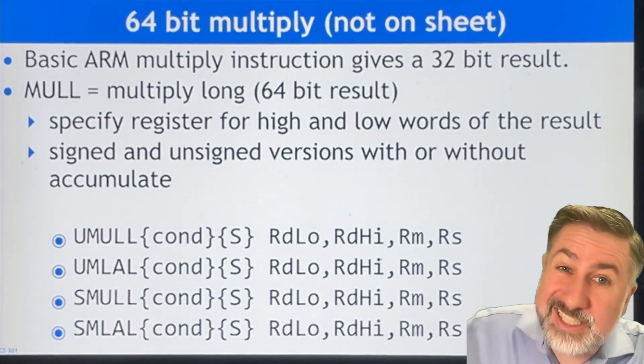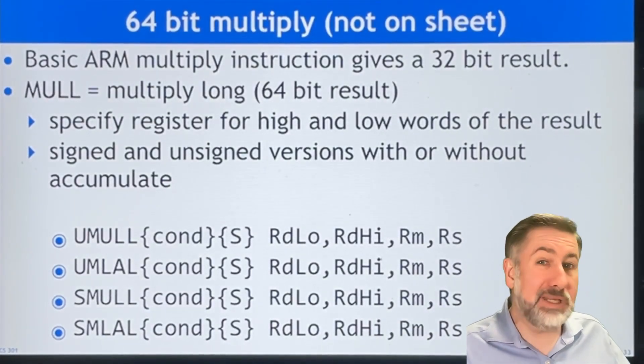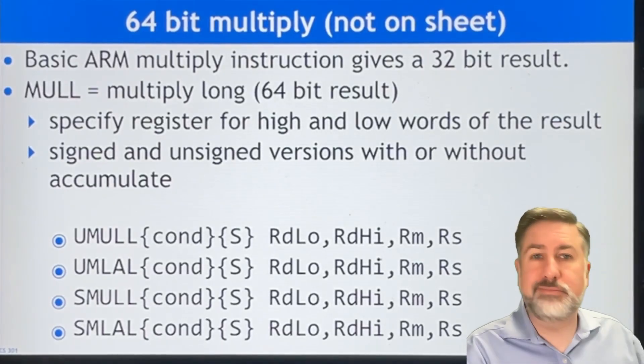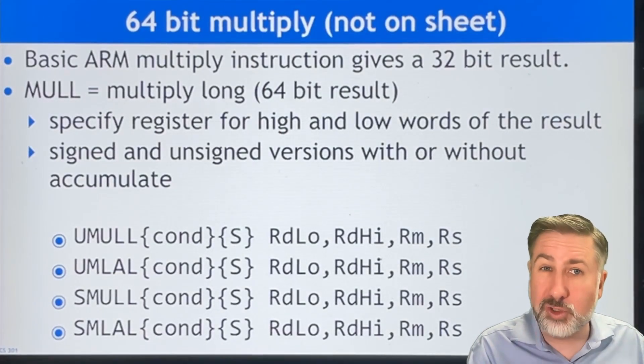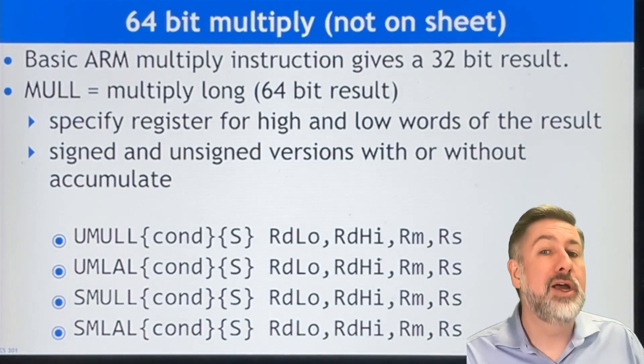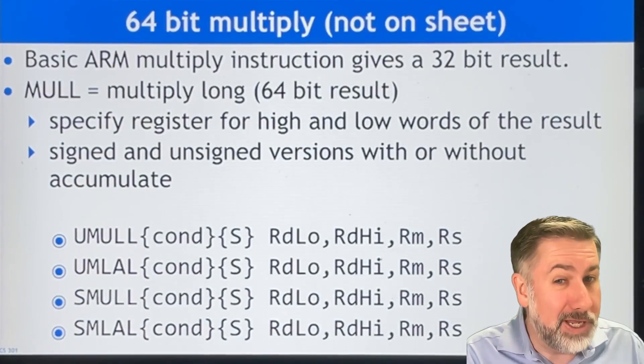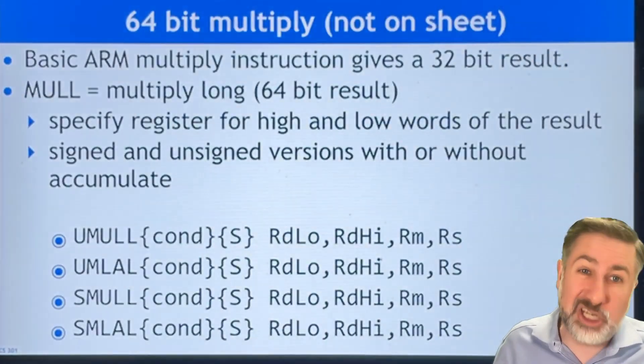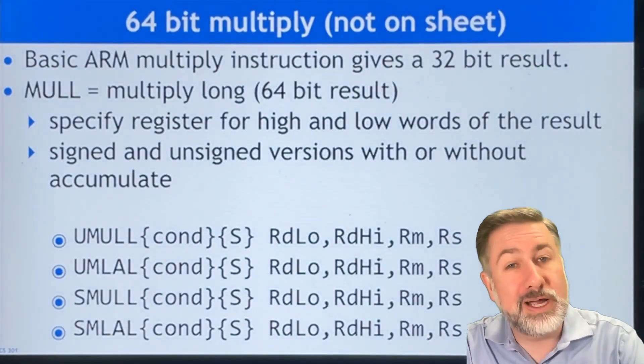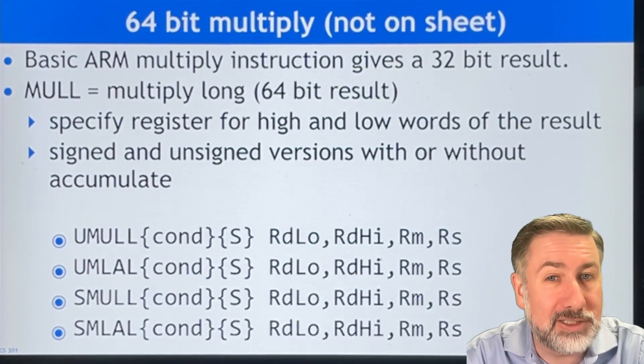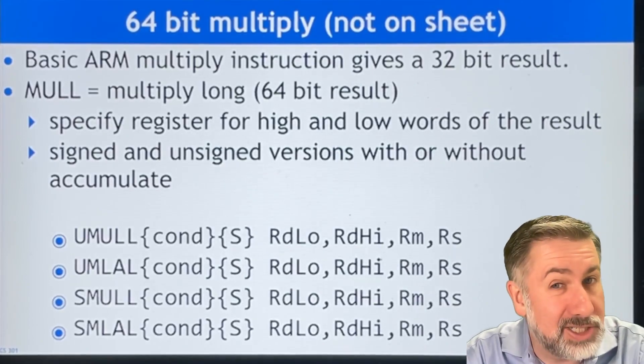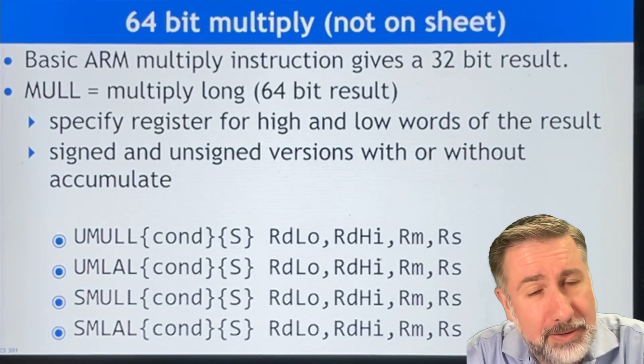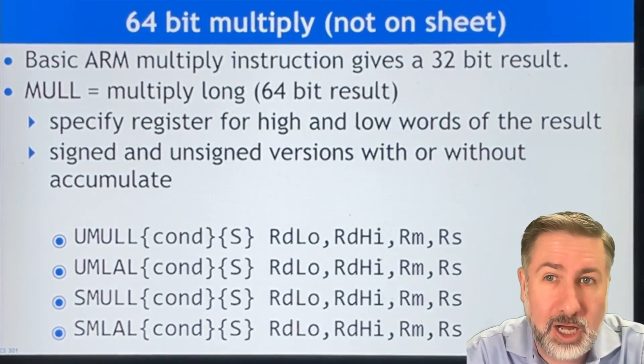Now, there is a 64-bit multiply. Because there are some times where you want to have the option of having the result be able to be stored regardless of how big it is. If you take two 32-bit numbers, the result of multiplying them could be as big as 64 bits. Now, I don't have that on the sheet. I think it's not common. And I think the recognition in the assembly language community is that if you're multiplying two numbers and you need to deal with a 64-bit result, maybe you should be thinking about something else, doing it a different way. But ARM implements it because it's an option.